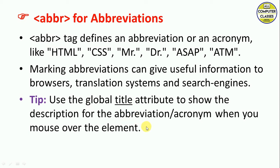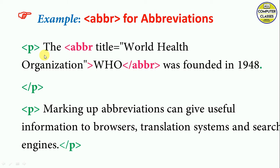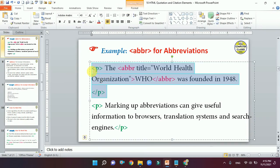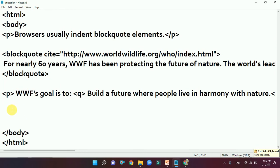Let me explain with an example of the abbreviation element. Pay attention to the first paragraph — the abbreviation tag starts and closes around 'WHO', followed by 'was founded in 1948'. Within the opening abbr tag, I have written the title attribute with the value 'World Health Organization'. That description is provided via the title attribute.